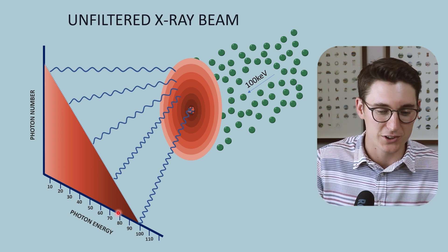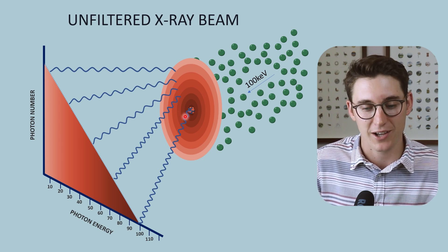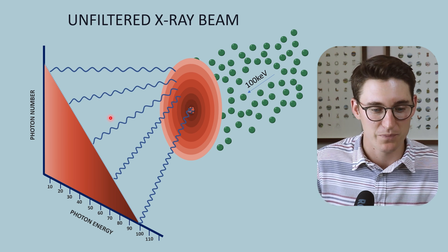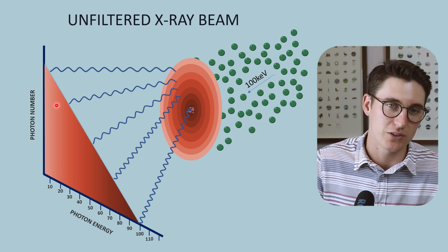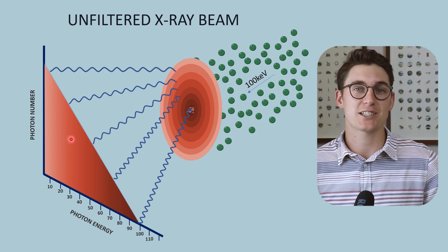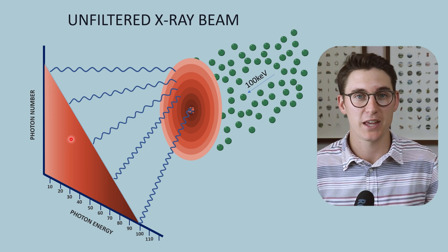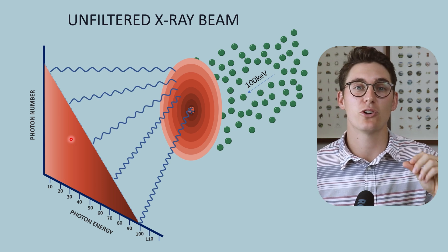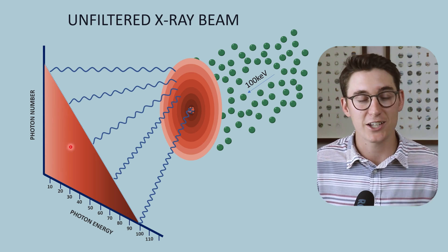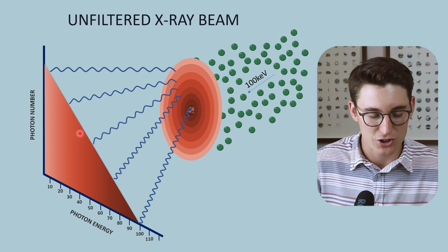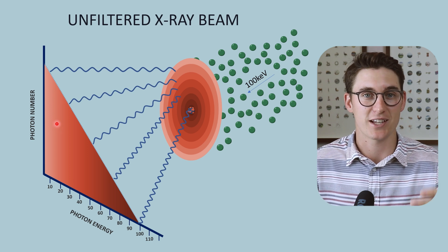This is our unfiltered Bremsstrahlung radiation curve — all the x-rays produced at the anode through Bremsstrahlung radiation. The vast majority are low energy photons. These photons interact with matter within our patient, releasing photoelectrons and inferring dose to our patient. These low energy x-rays are much more likely to be attenuated and not reach the x-ray detector, so they contribute to patient dose but not to our image.